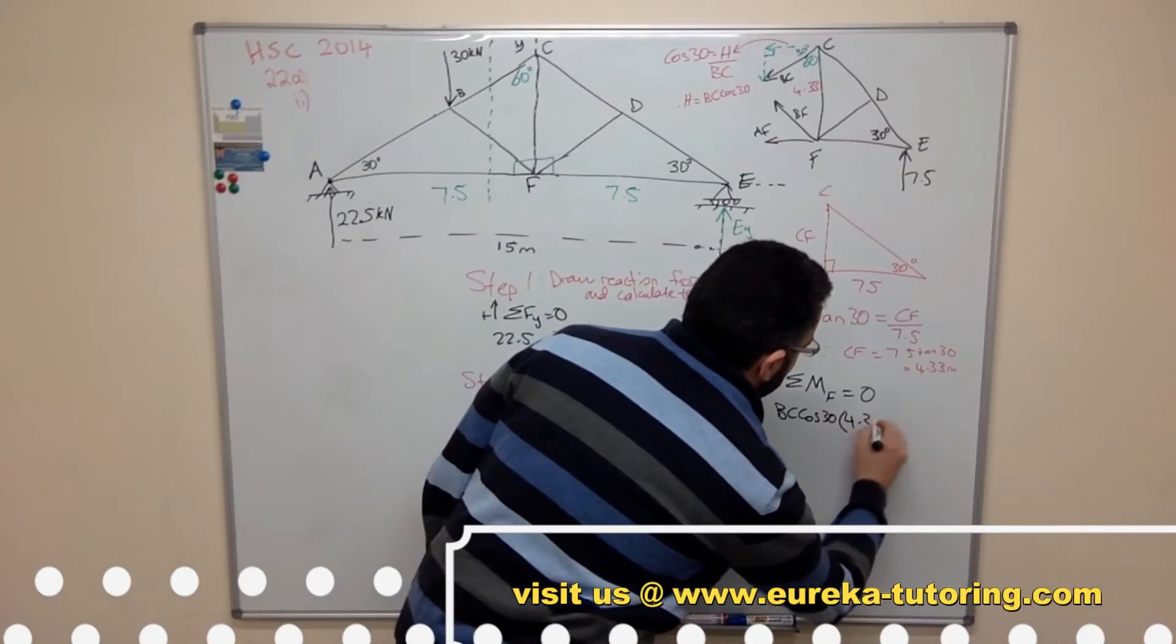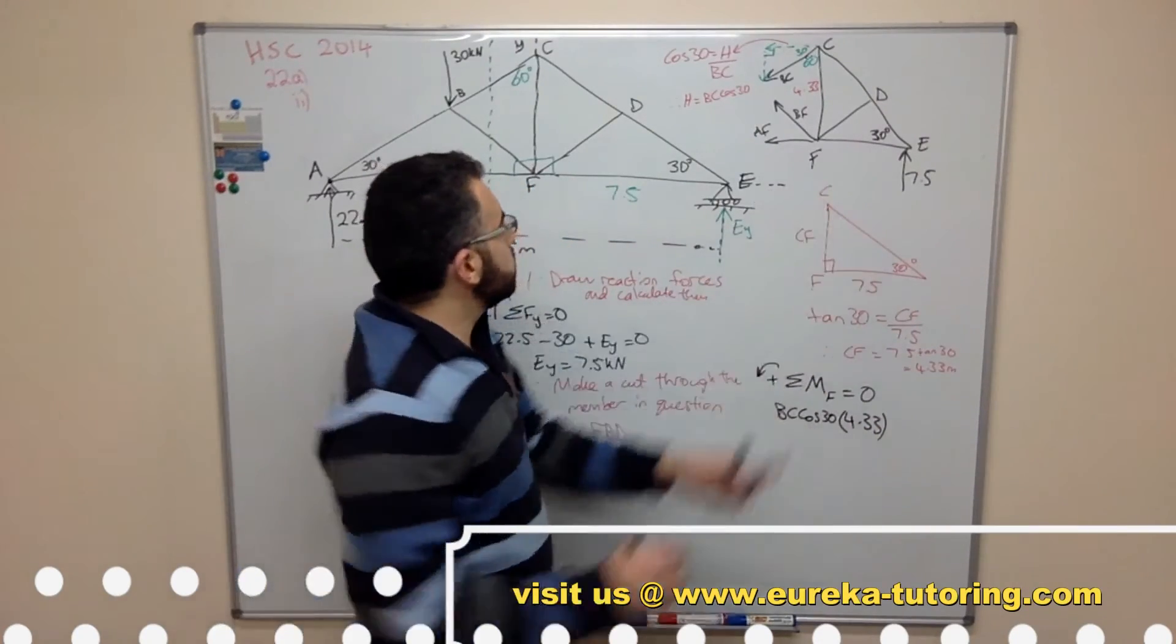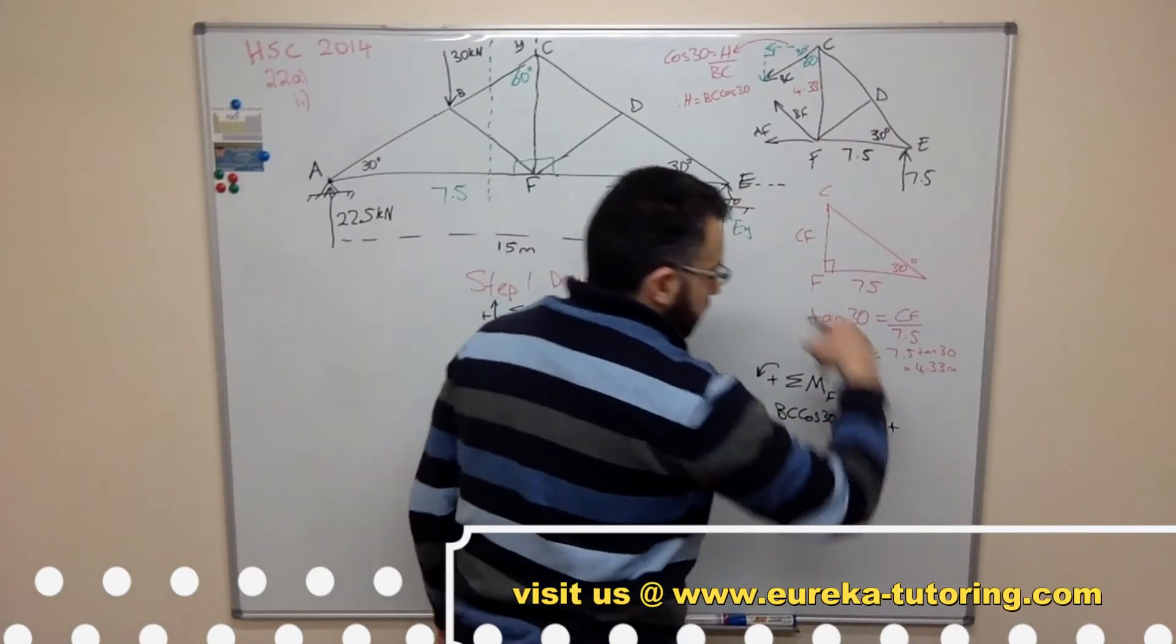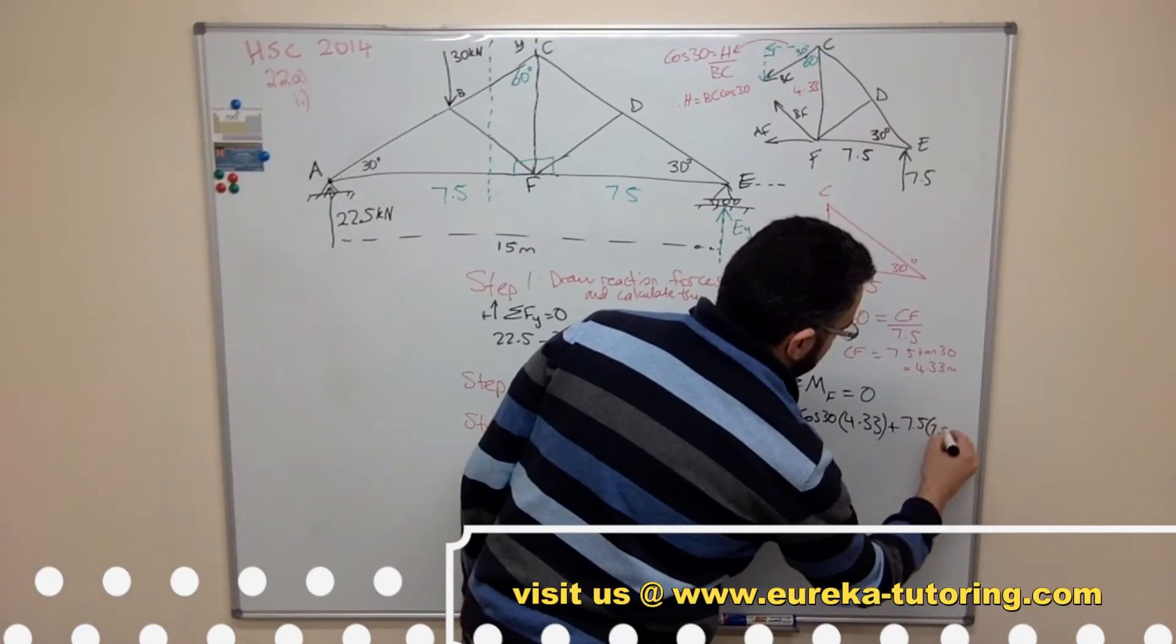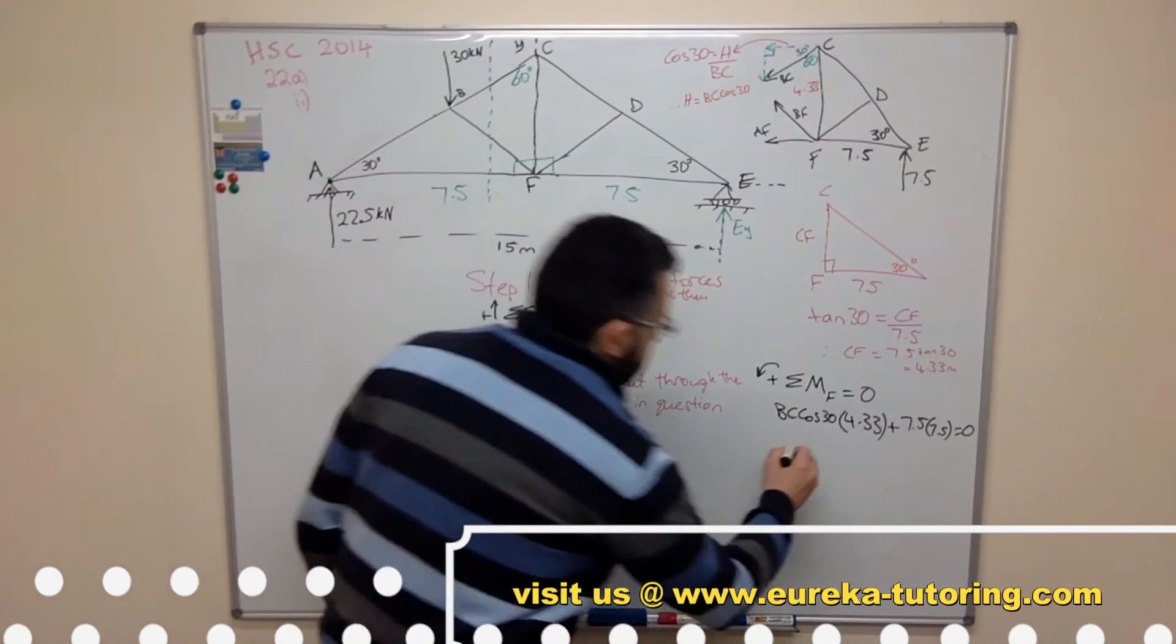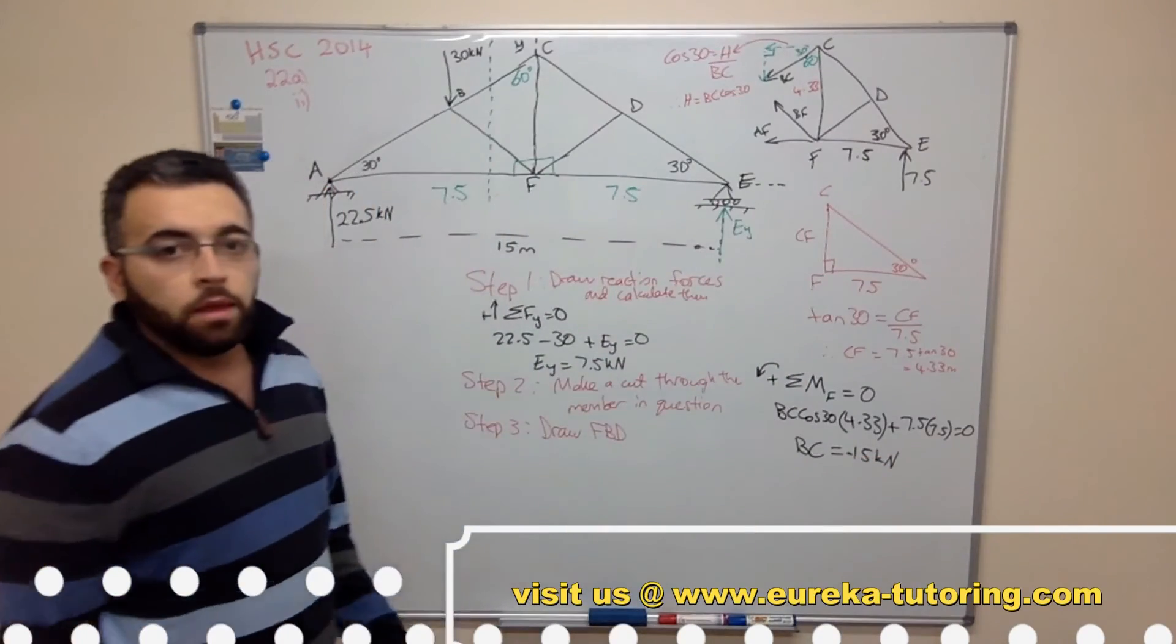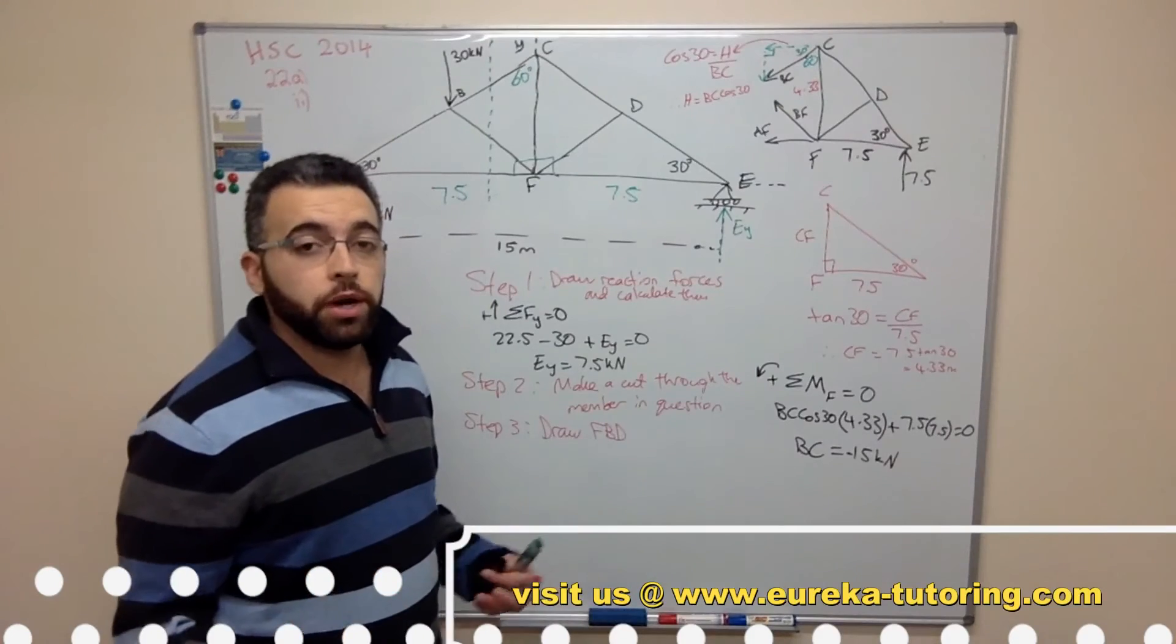BC cos 30 times its perpendicular distance, which is CF, and we found out to be 4.33, so 4.33, plus this force times its distance, which we found out to be 7.5 here. So it's creating a moment around the point F, so it's going anticlockwise. 7.5 times perpendicular distance which is 7.5, and that equals zero. So do your algebra and you get BC to be 15 kilonewtons negative.